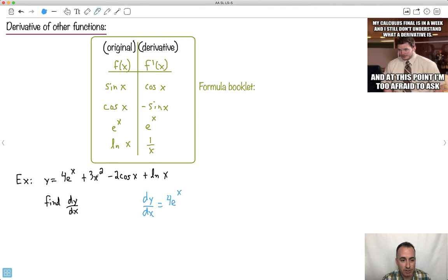The 2 comes in front. 2 times 3 is 6. So it becomes 6x to the power of 2 minus 1 is just 1. So there we go. How about this one? We have minus 2. Now, what's the derivative of cos x? Derivative of cos x is minus sine x.